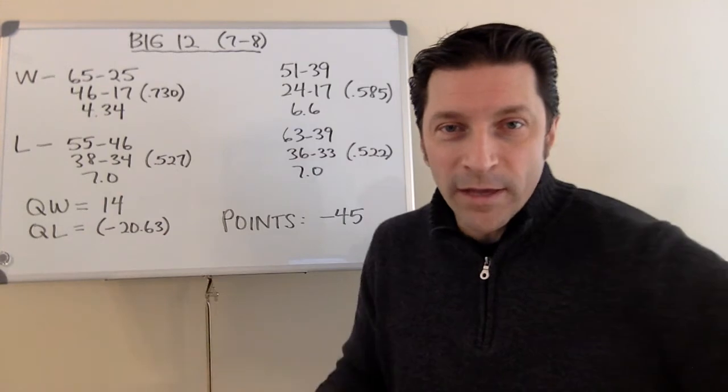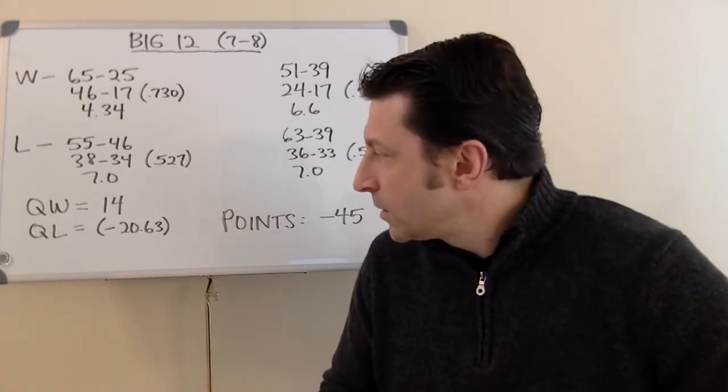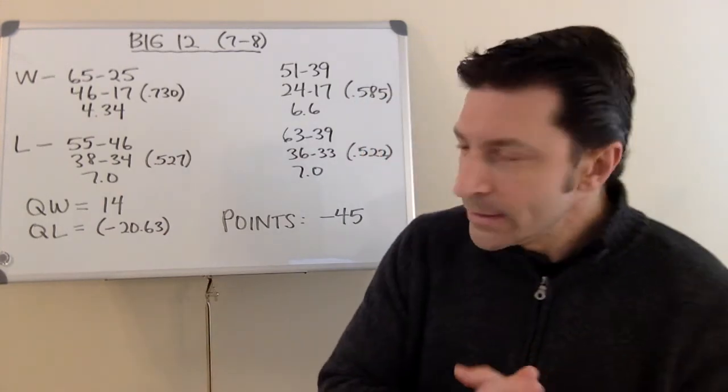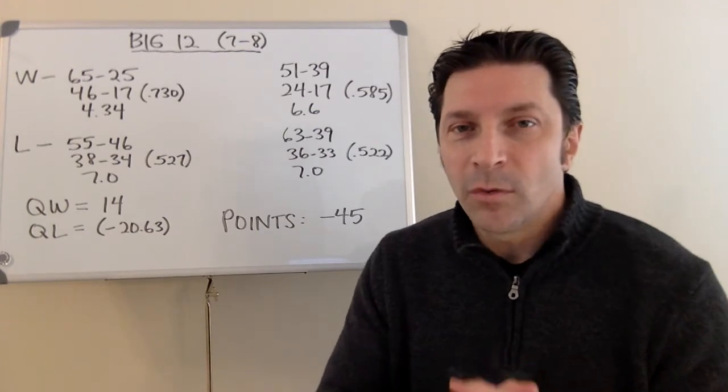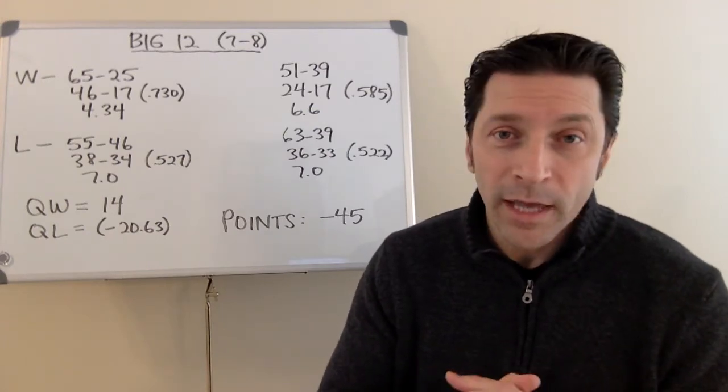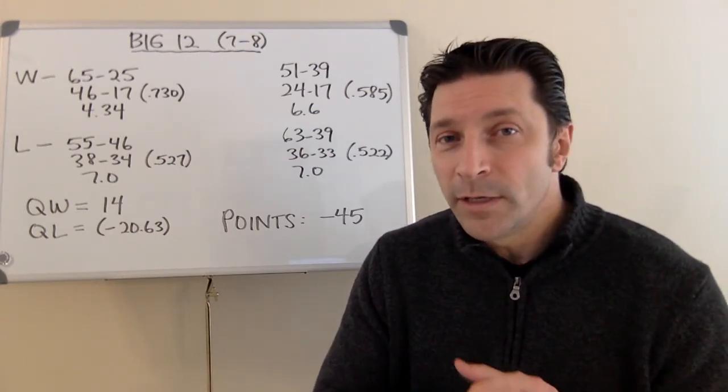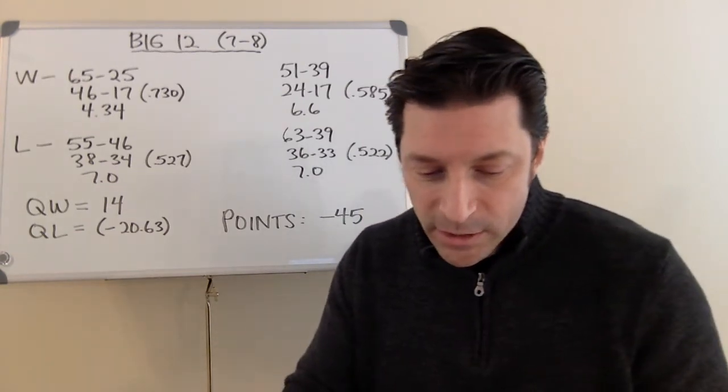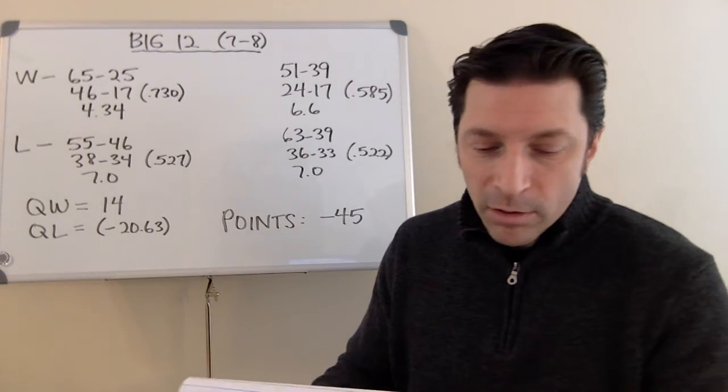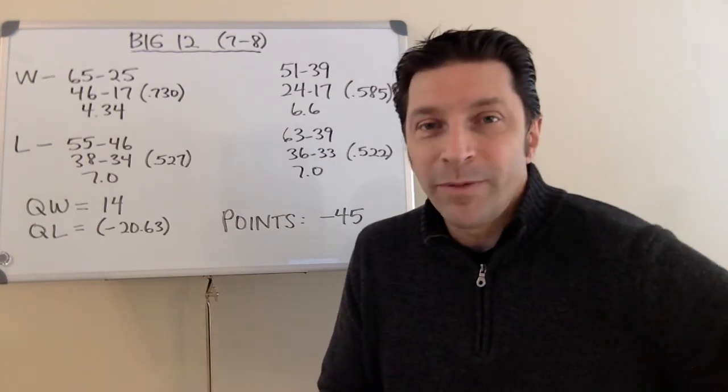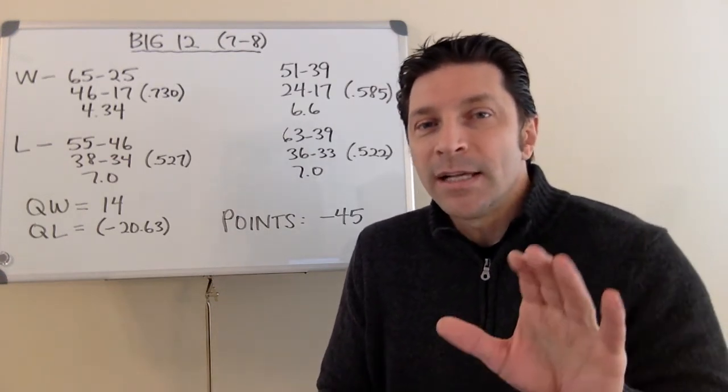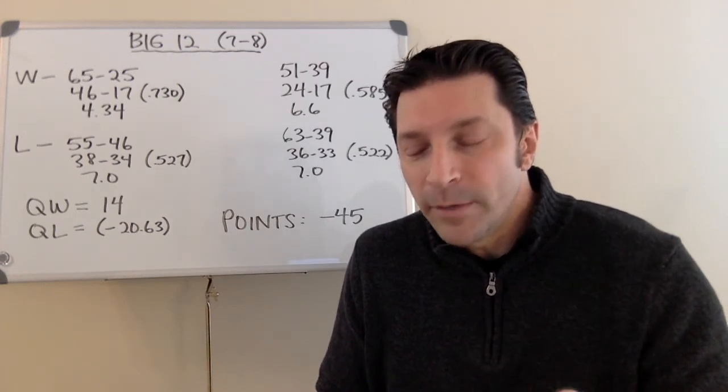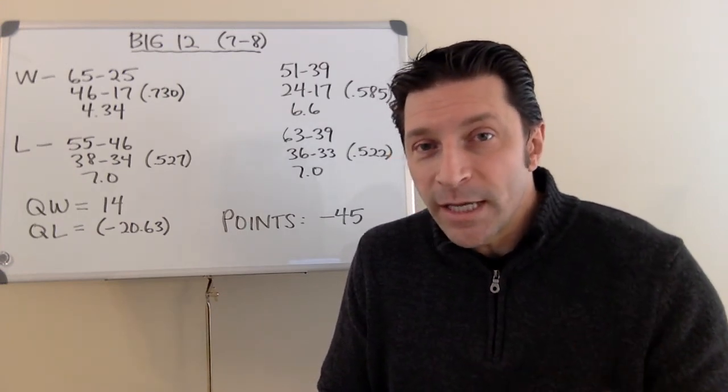So, the quality of win, what that number means, and again, watch the introductory video, is that every game starts out as a 20-point win for the conference that won the game, a negative 20 points for the conference that lost the game. Then, we adjust it for seeding. So, for example, Oklahoma State's a 2 seed. They defeated Pitt, a 7 seed out of the ACC. So, that starts out as a 20-point win for the Big 12. But, we adjust for the seeding.